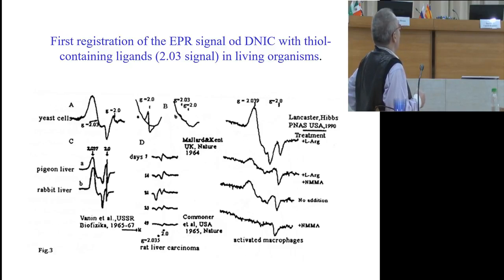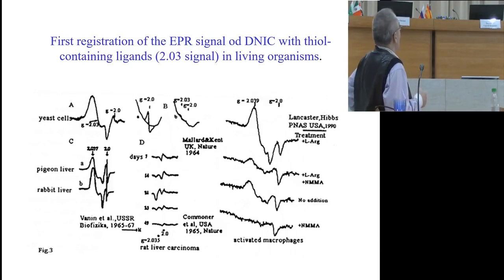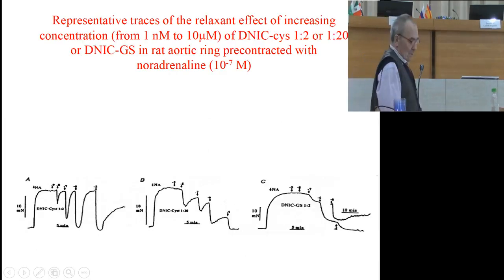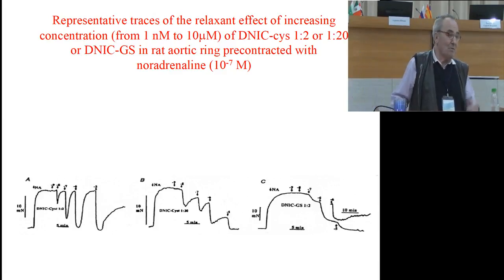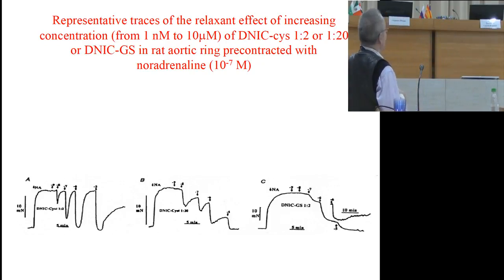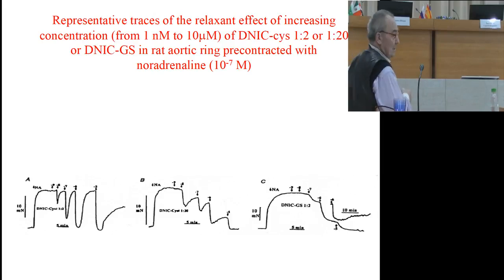American data shows that inhibitors of NOS block the signal. I am trying to show that free, unconnected molecules of nitric oxide are less effective, but when included in the complex they start to work successfully. On isolated cardiovascular vessels affected by noradrenaline, the complex causes relaxation of the vessels.